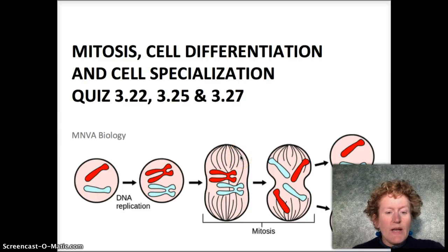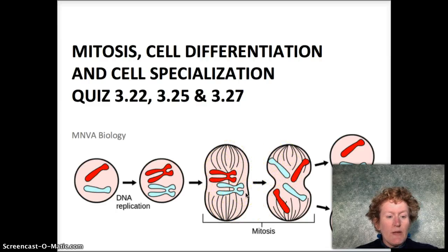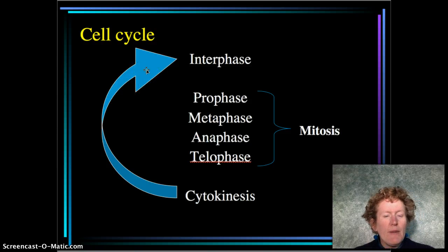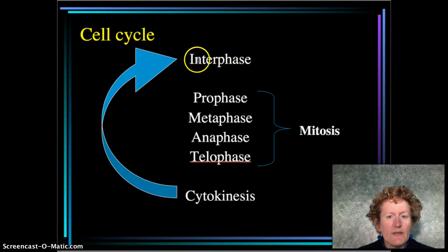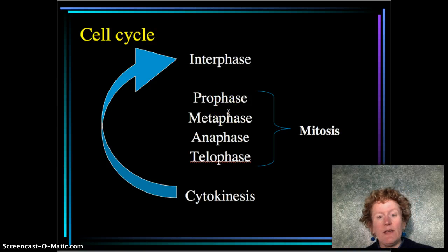Mitosis is the process in which a cell splits up its chromosomes in the nucleus, splits up the nucleus, so that there are two perfect copies of that nucleus. It's part of the cell cycle, and most of the cell cycle is spent in interphase. Mitosis is towards the end of the cell cycle, and it has four steps.